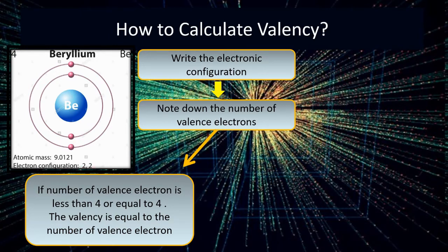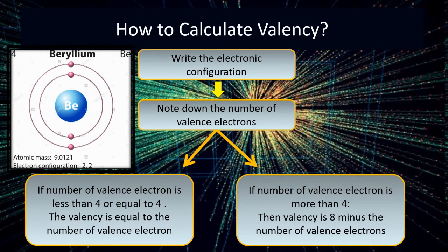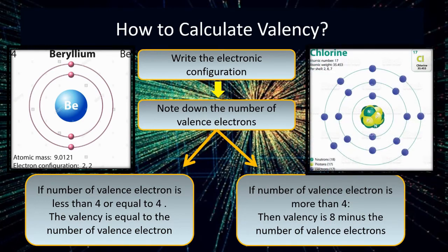What if the number of valence electrons is greater than 4? In this case, you subtract the number of valence electrons from 8. For example, chlorine has 17 electrons, so its electronic configuration is 2,8,7. The valence electrons are 7, which is greater than 4. So the valency is 8 minus 7, that is 1. And this is how you calculate the valency of any atom in the periodic table.